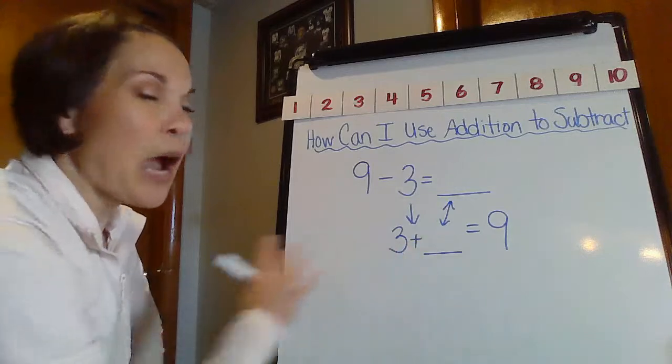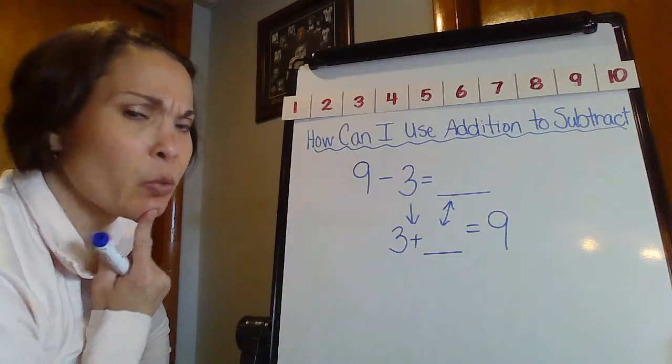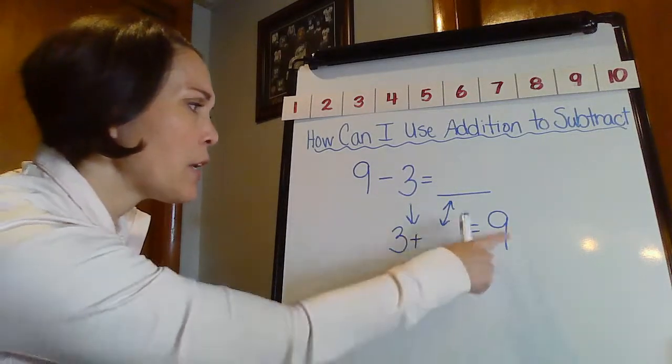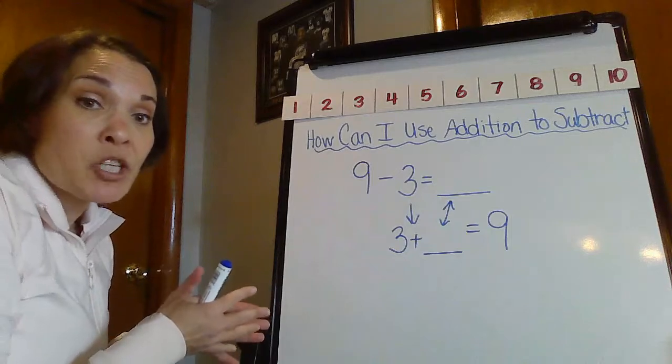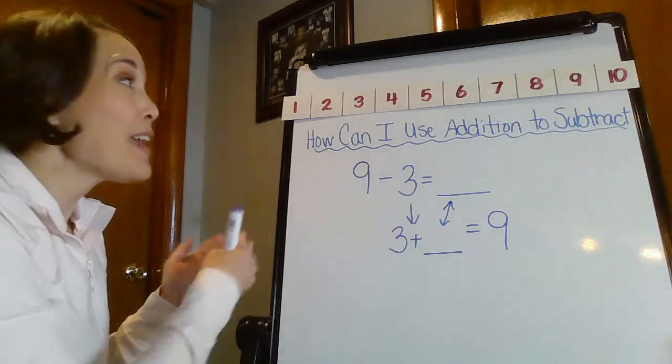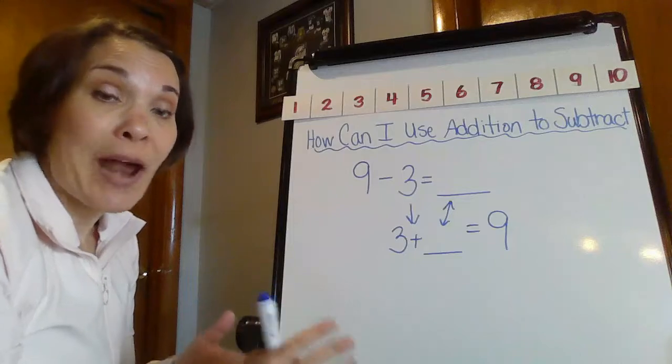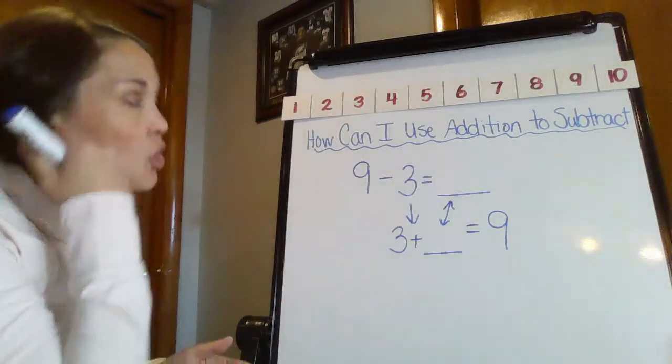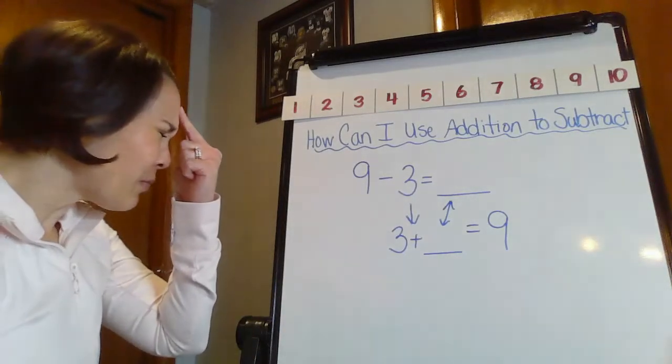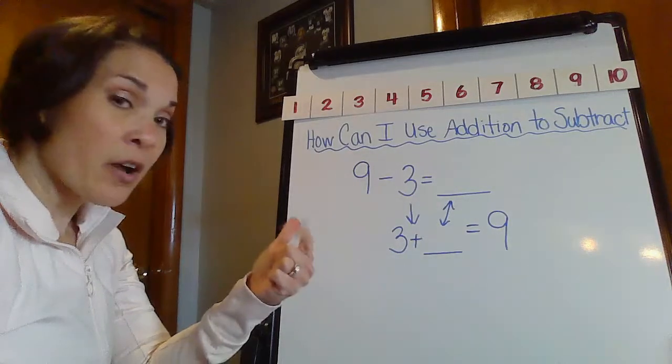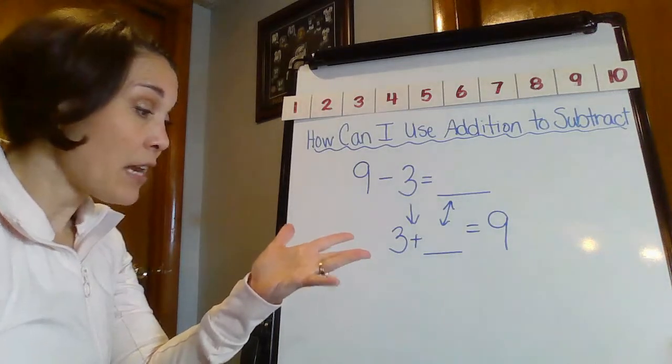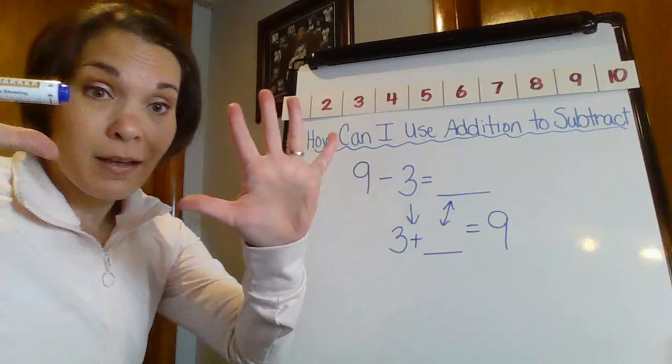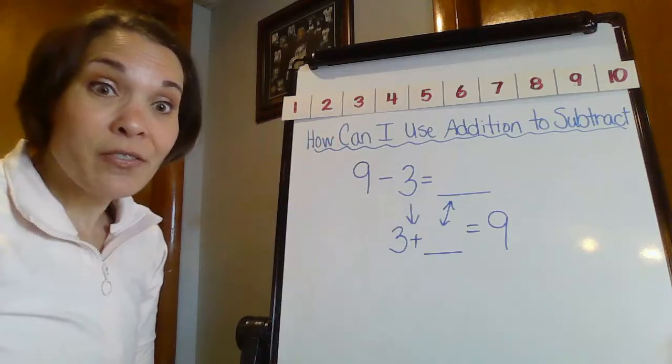So let's figure out how we're going to do this. 3 plus what gives me 9? Well, let's remember the strategy that we did. We counted on in order to help us figure out what that was. So if I put 3 in my brain: 3, 4, 5, 6, 7, 8, 9. I have 6.